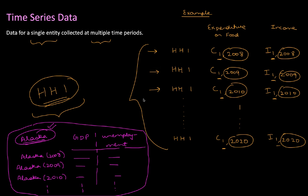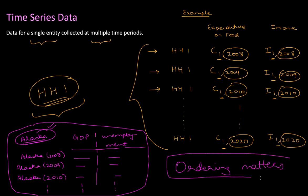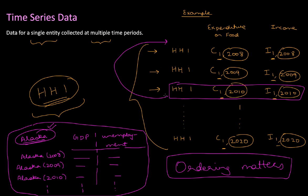Before I end this lecture, there is one last thing to keep in mind. Unlike cross-sectional data, in time series data the ordering of the observations matters. I cannot take the 2010 observation and place it first — the first observation has to be 2008, followed by 2009. You have to process the data in a particular chronological order. This was not the case with cross-sectional data, where it doesn't matter which state or household you write first.